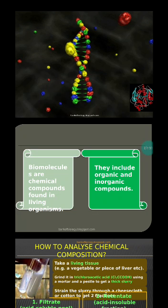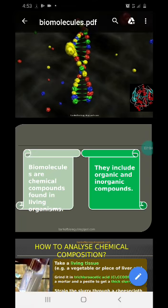What do you mean by organic? These organic compounds are made up mainly of carbon, hydrogen, oxygen, with proteins also containing nitrogen, sulfur, and so on. Inorganic substances include calcium, magnesium, phosphorus — all those things are inorganic materials.